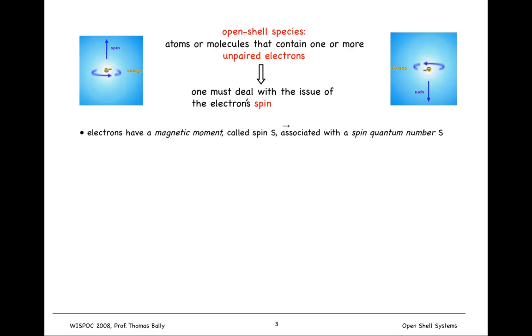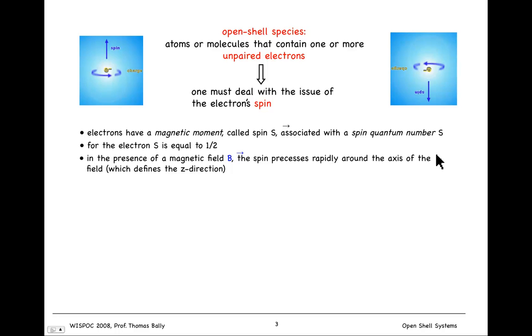In any case, what is known is that electrons have an intrinsic magnetic moment, and we call that the spin. And it's associated with a spin quantum number, S. So for the electron, S is equal to one-half in atomic units. And in the presence of a magnetic field B, the spin precesses. So here's the spin of the electron, the magnetic moment, and when I turn on a magnetic field, it will begin precessing about the axis of the field, and the Z component of the spin will take on quantized values.